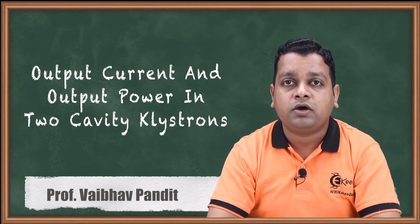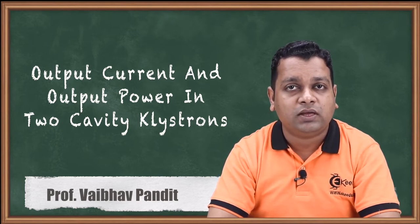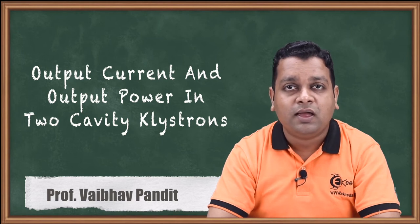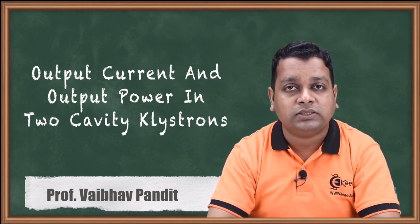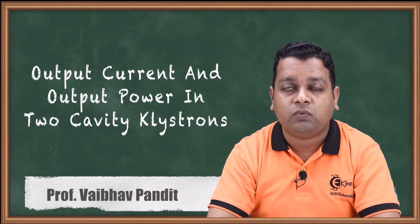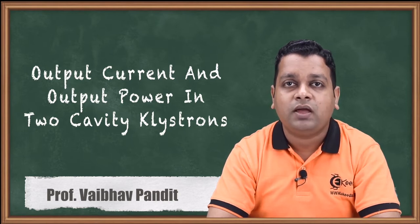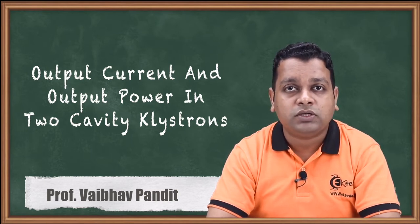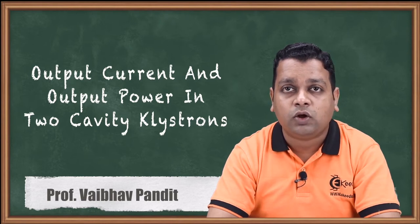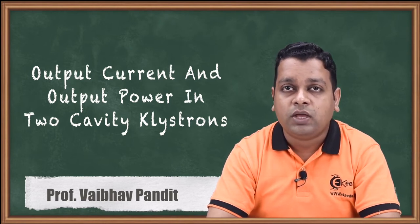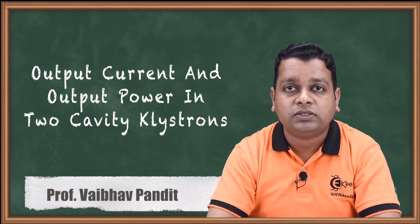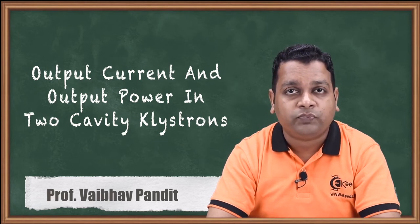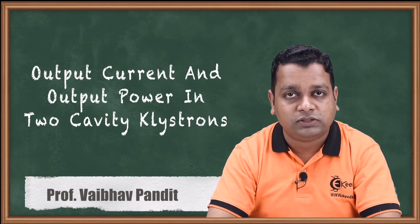The family of microwave linear beam tubes is to be addressed in this particular chapter and we started with the very popular microwave device, the two-cavity klystron working as amplifier. We have seen the velocity modulation principle and the working along with the bunching process. We have derived parameters with respect to this device and based on them we have solved problem number one also.